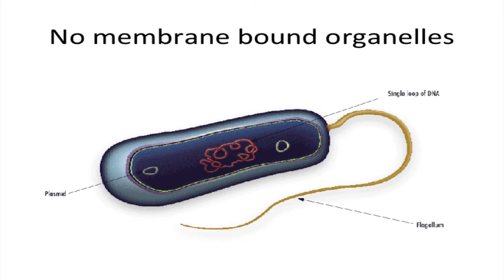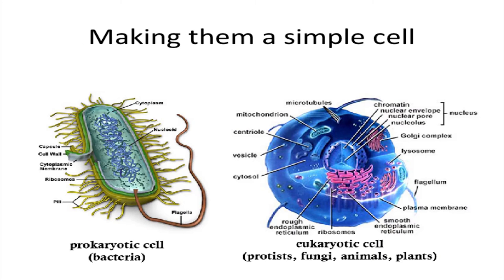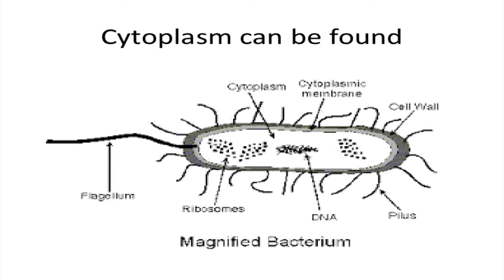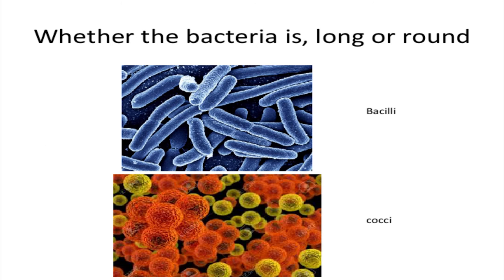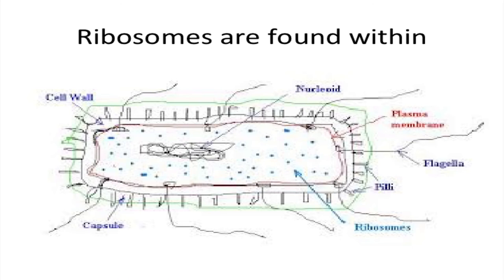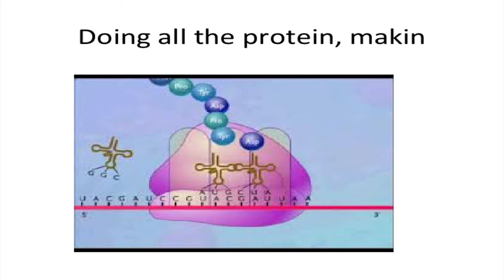No membrane-bound organelles, making them a simple cell. Cytoplasm can be found whether the bacteria is long or round. Ribosomes are found within, doing all the protein making.